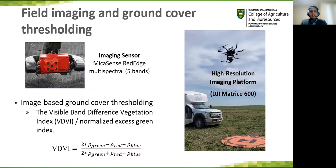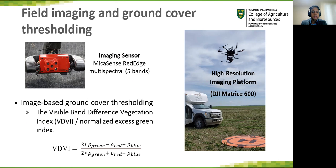Our main target of the experiment is to establish object and image-based technology. Because of that, we used a Micasense red-edge multispectral five-band imaging sensor to image our field. This sensor was mounted on a high-resolution imaging platform, which was a DJI Matrice 600. Image-based ground cover thresholding was done using the visible band difference vegetation index, sometimes called the normalized excess green index.